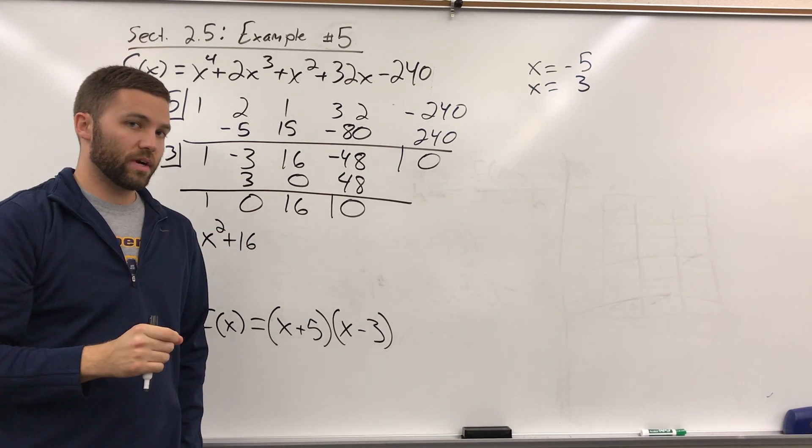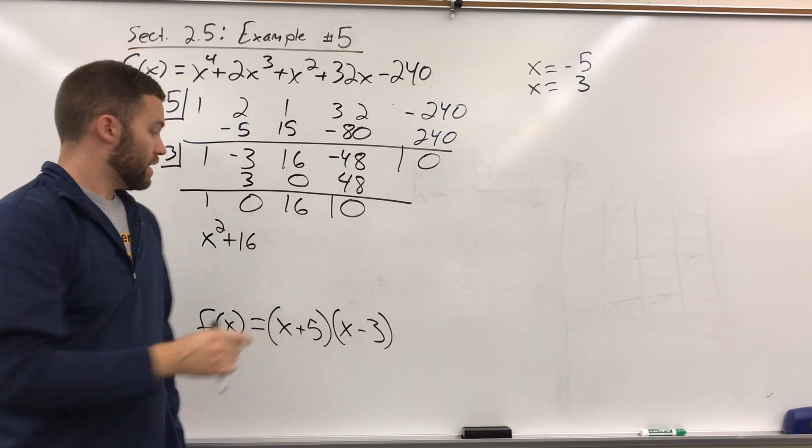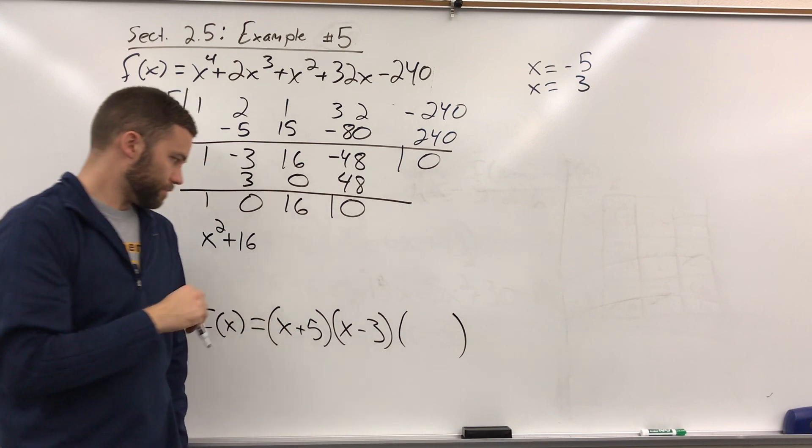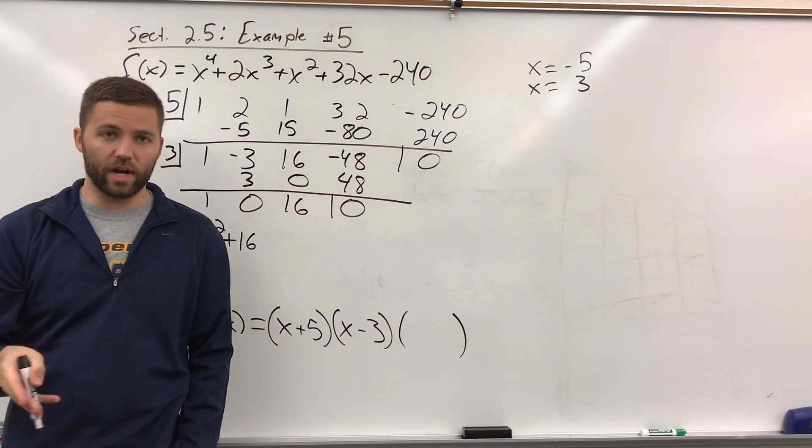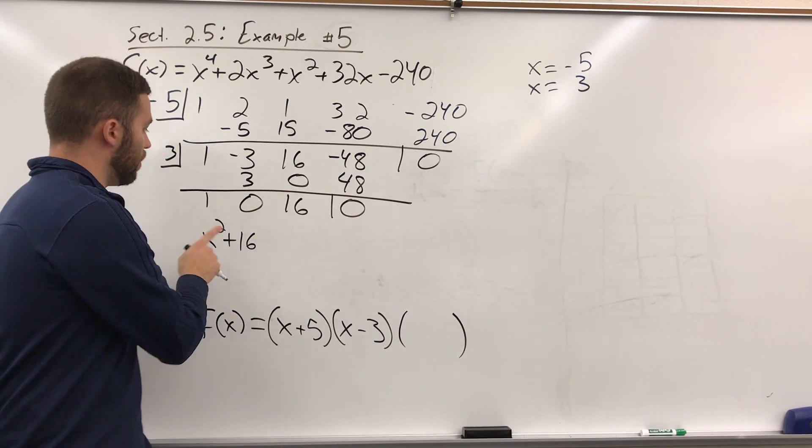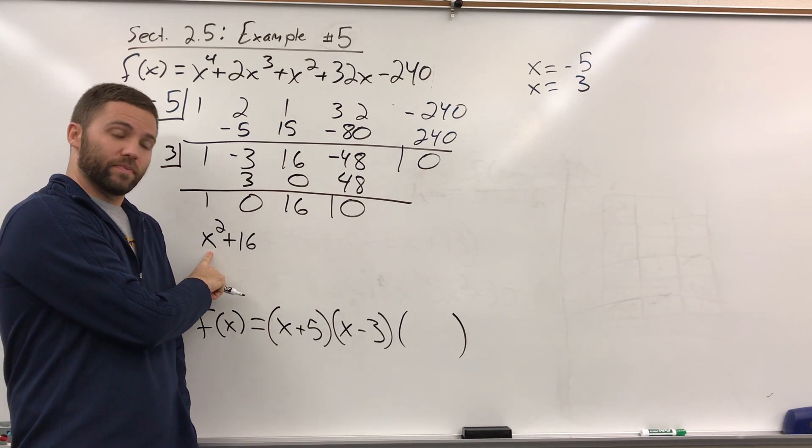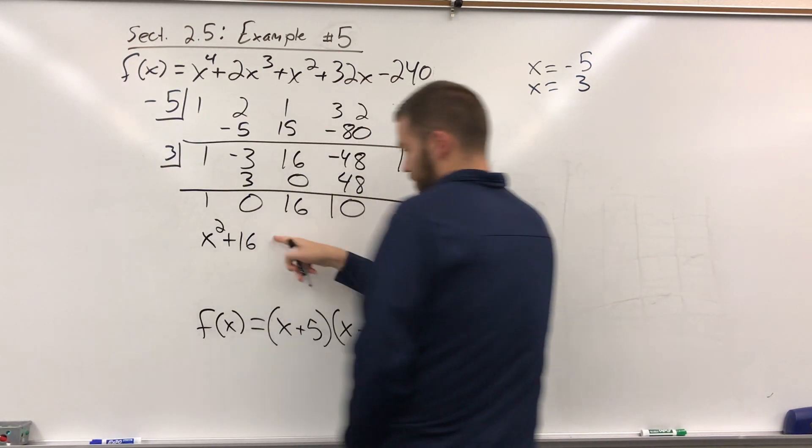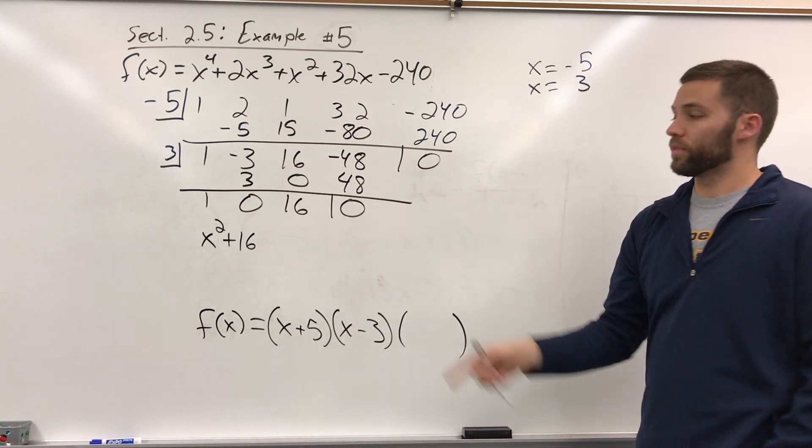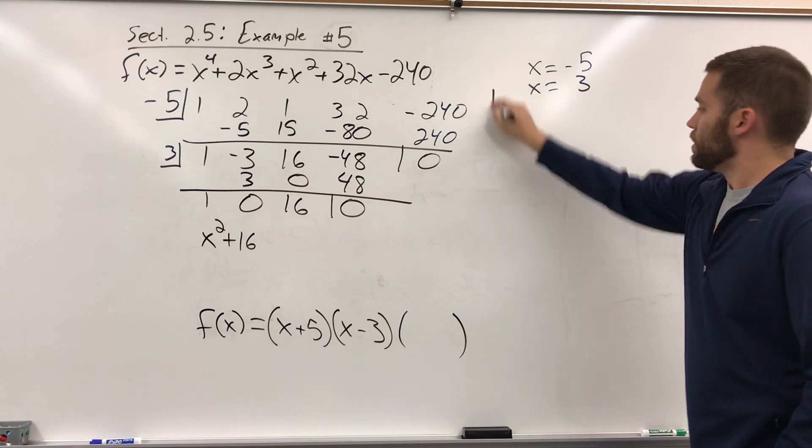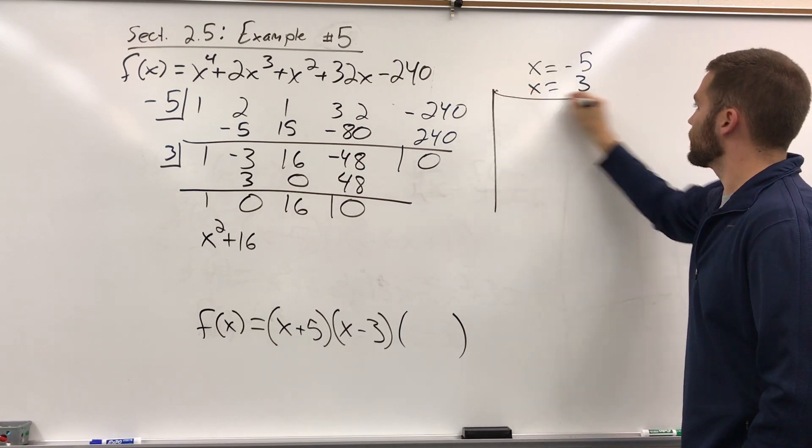Now, the instructions say to write as a product of linear factors. This, while it would be our last factor we could write in here, is not linear, it's quadratic. So we need to figure out how to write this as two linear factors. The way that we're going to do that is we'll set it equal to 0 and figure out what x values make that 0.